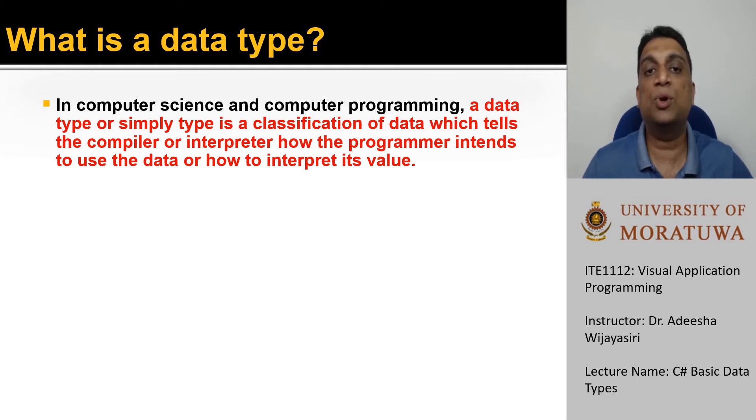Similarly, to store one character, you need only very little space. But to store a sentence, you may need comparatively a large memory space. So, if you tell the compiler or the interpreter about the type of data you are going to store, it can allocate the memory space suitable to your data type.